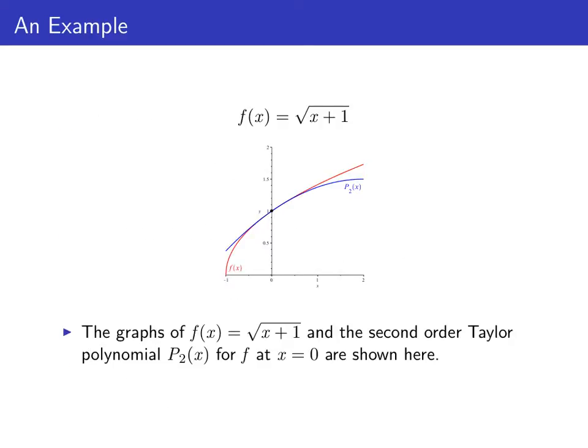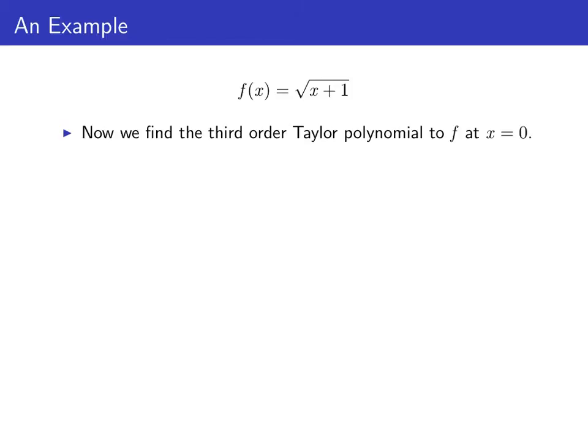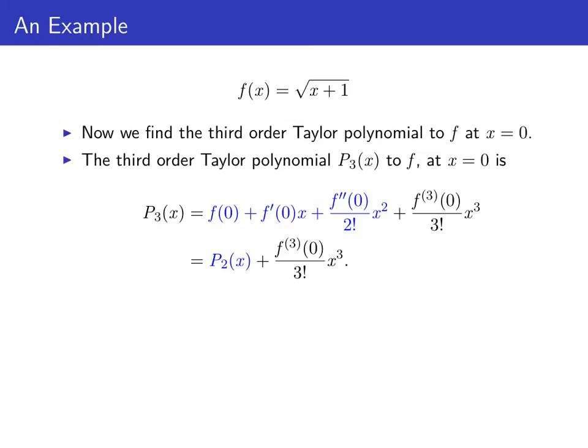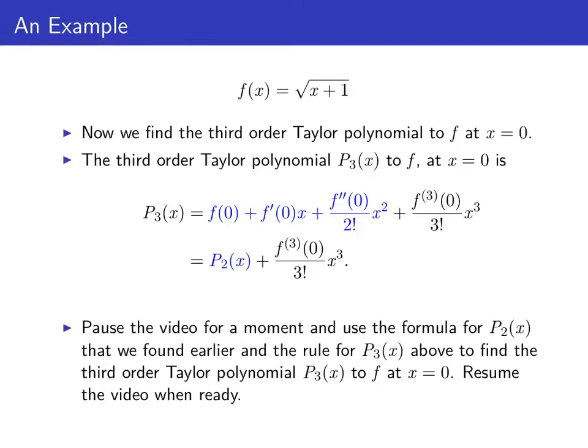Here we show the graph of p₂(x), which is now a quadratic in blue against the graph of f. You can see that the graph of p₂(x) molds a little bit better around the graph of f(x) at zero than did p₁(x). Let's go ahead now and find the third order Taylor polynomial to f at x = 0. p₃(x) is just p₂(x) plus the third derivative of f at zero divided by three factorial times x cubed. Pause the video for a moment, find the third order Taylor polynomial for f at zero, and resume when you're ready.